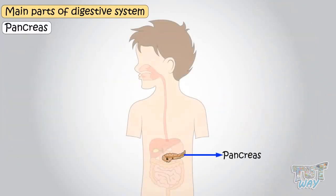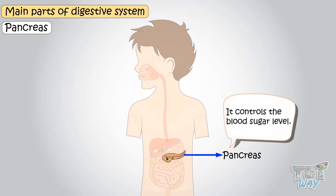Pancreas — the main role of our pancreas is to control the blood sugar level.